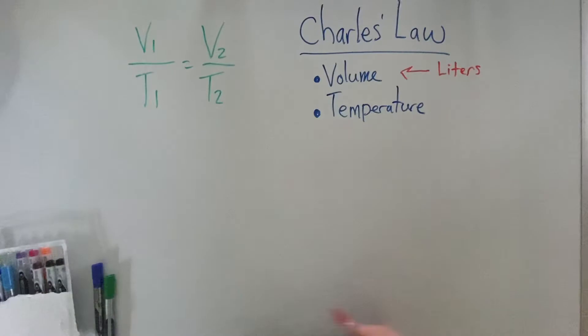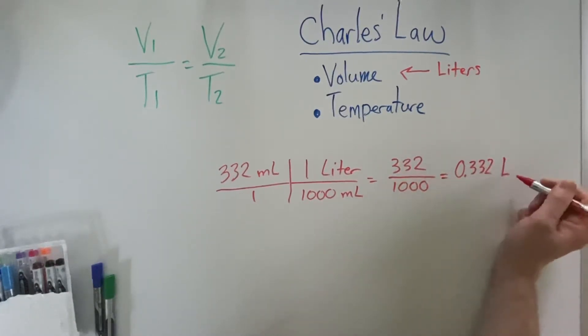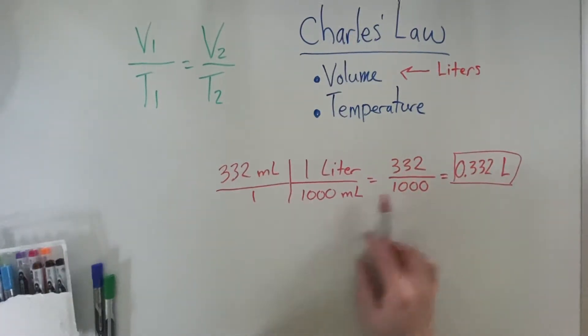So let's take a look at what that means. If I had a problem that said I had 332 milliliters, then I would have to convert that into liters. I could do a dimensional analysis problem where I know that in one liter, I have 1,000 milliliters. So you're taking the number in milliliters, dividing it by 1,000, and you're going to get 0.332 liters. You will have to make sure that whenever you put any numbers into this equation, that you first have the volume as liters.